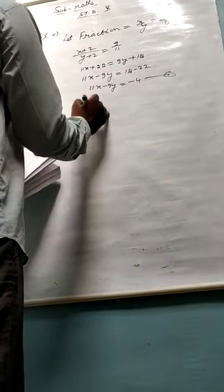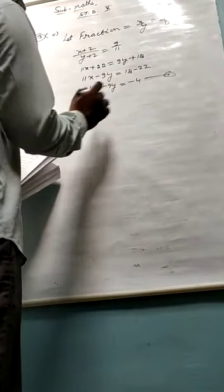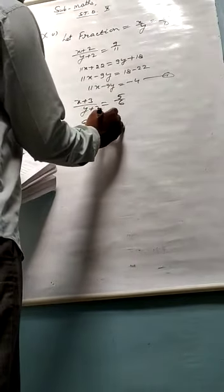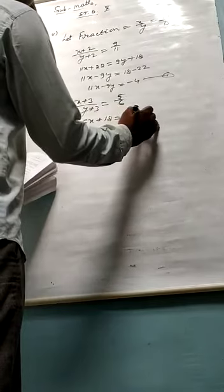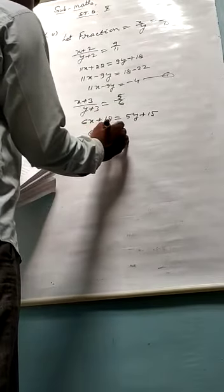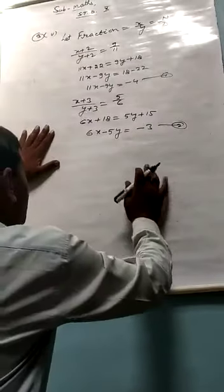Accounting condition second. If 3 is added both numerator and denominator, it becomes 5 upon 6. x plus 3 upon y plus 3 equals 5 upon 6. Cross multiply se multiply karenge. 6x plus 18 equals 5y plus 15. 6x minus 5y equals 15 minus 18, minus 3. Equation 2. Equation 2 ko solve karke xy ki value find kar dijiye.